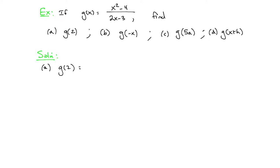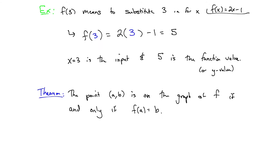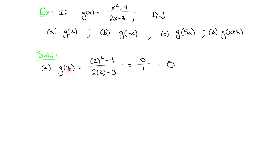Solution, part a: g(2) means substitute 2 for x wherever you see it. We have x² and 2x, so we replace both: (2² - 4) / (2·2 - 3) = (4 - 4) / (4 - 3) = 0/1 = 0. Since g(2) = 0, the point (2, 0) is on the graph.